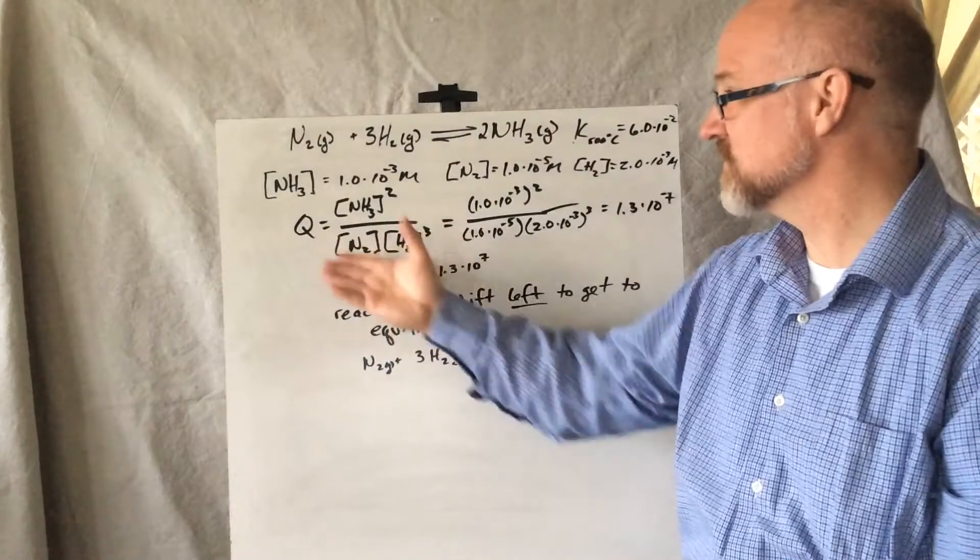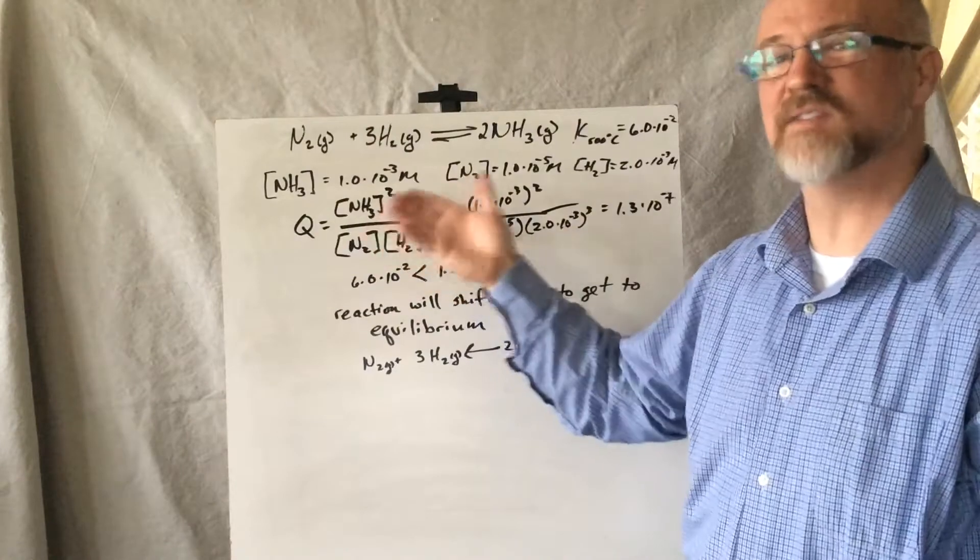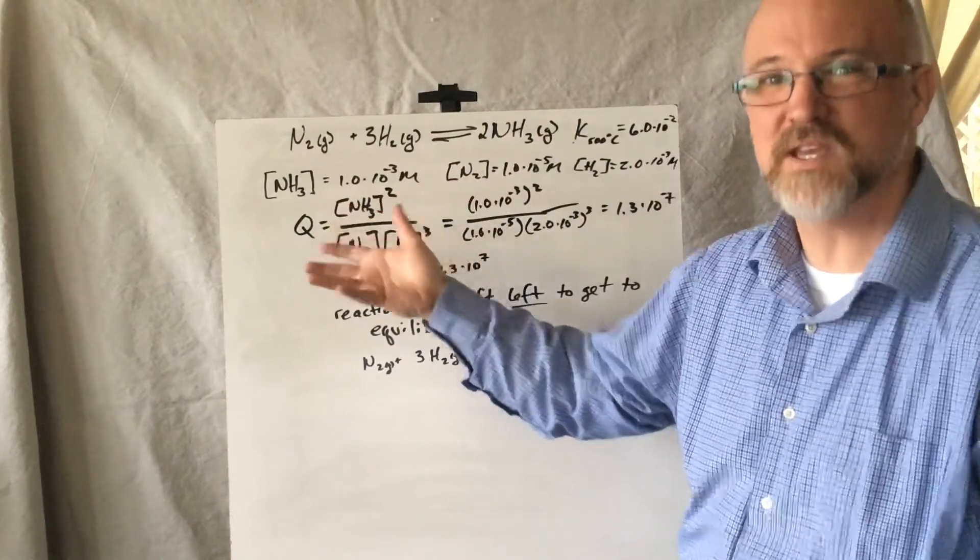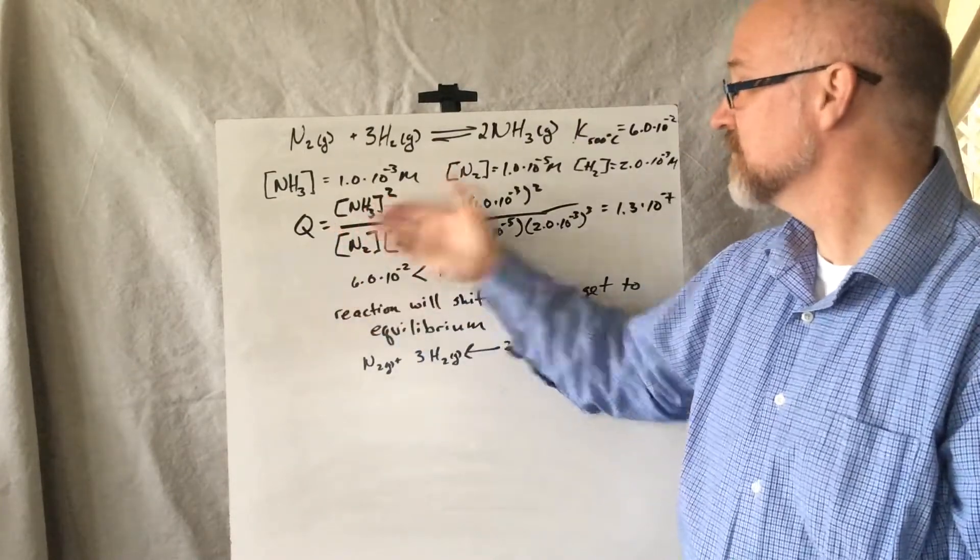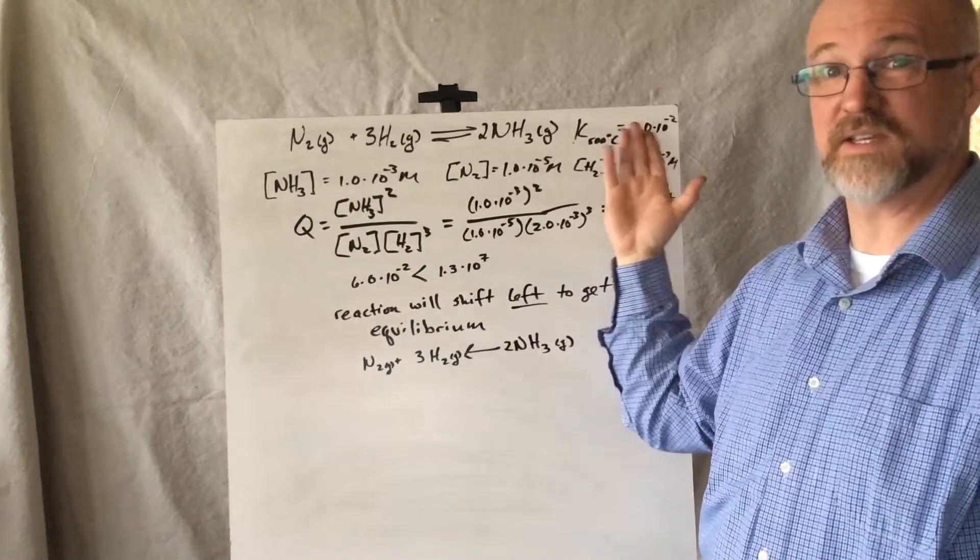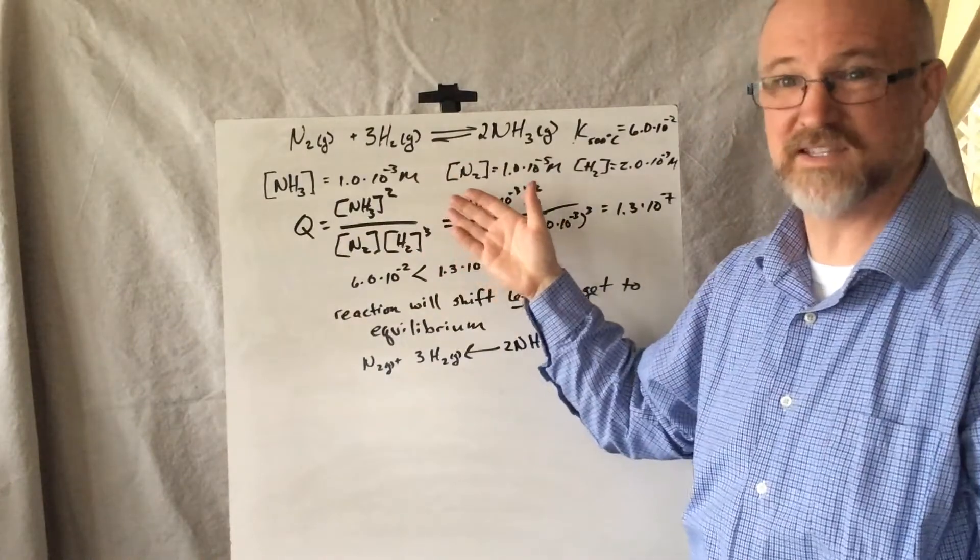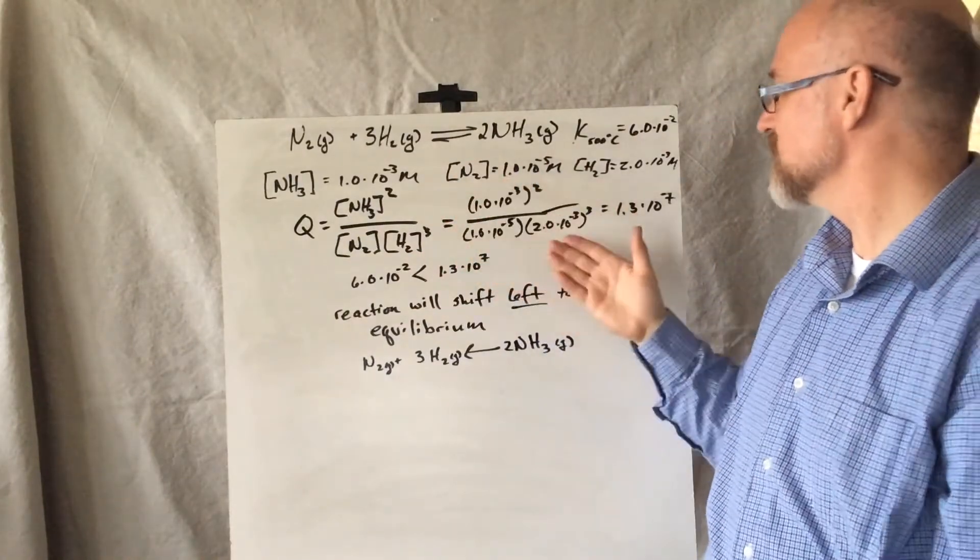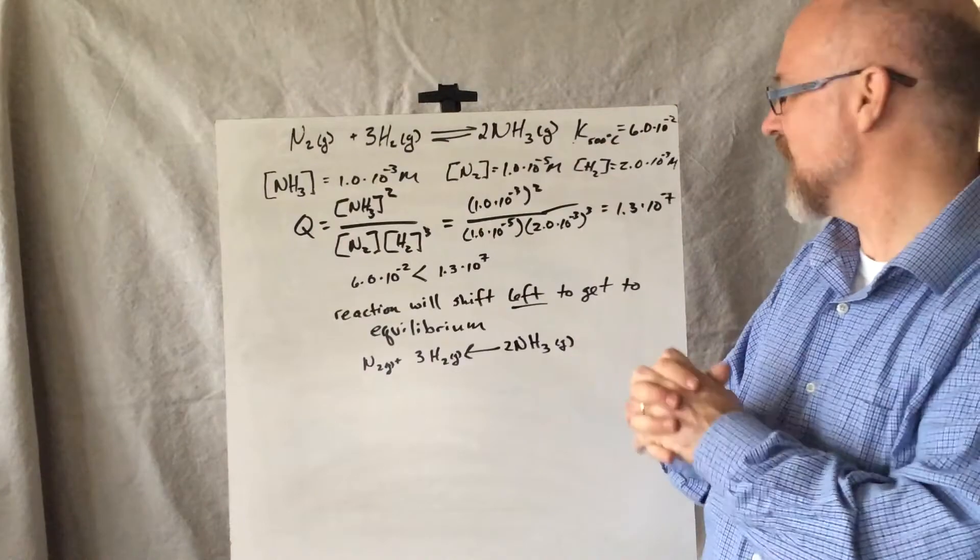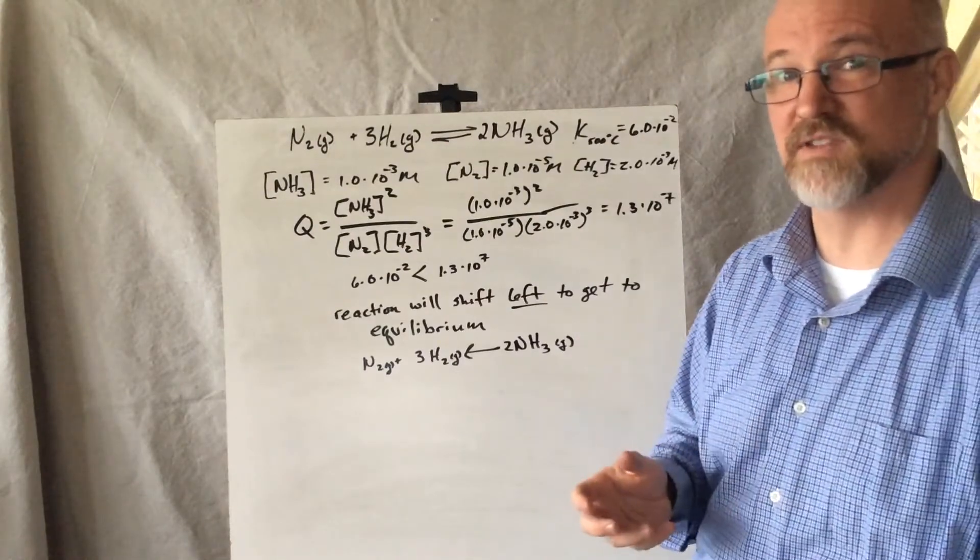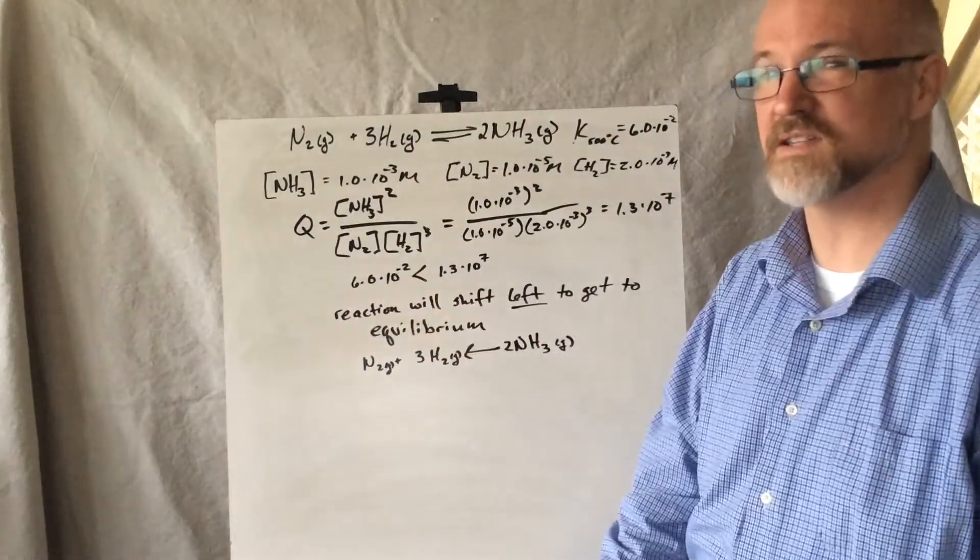We plug the math in. Here's that law of mass action, just like we calculated to determine the concentrations. If we had them at equilibrium, what would the equilibrium value be? Well, now we're going to call it Q because we don't know if this is equilibrium or not. But we do know what the equilibrium value is. So we plug them in. And there's writing the equilibrium expression, if you will. In this case, now it's a Q expression. Put the numbers in. Do the math. When I work this all through and do the math, the answer I get for this Q value is 1.3 times 10 to the 7th. That's ridiculously large and much larger than 6.0 times 10 to the negative 2.